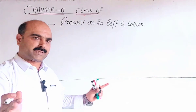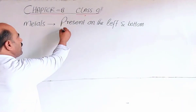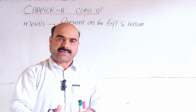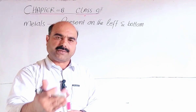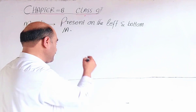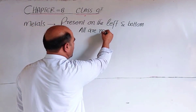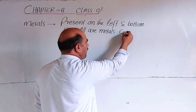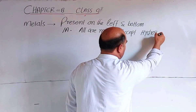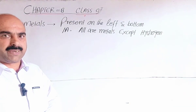Classification of elements: Group 1 elements include hydrogen, lithium, sodium, potassium, rubidium, cesium, and francium. Except hydrogen, all are metals. Hydrogen is placed at the top but is a non-metal. Group 2 — alkaline earth metals — are all metals with no exceptions.